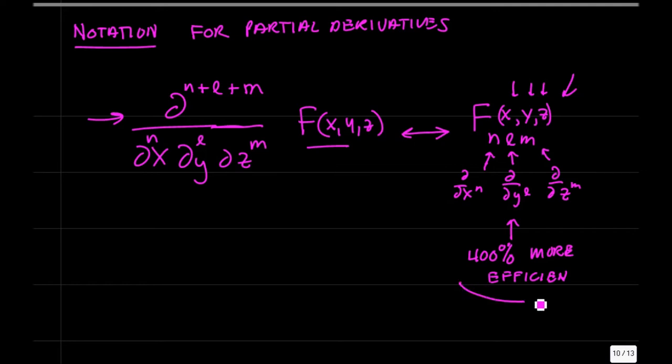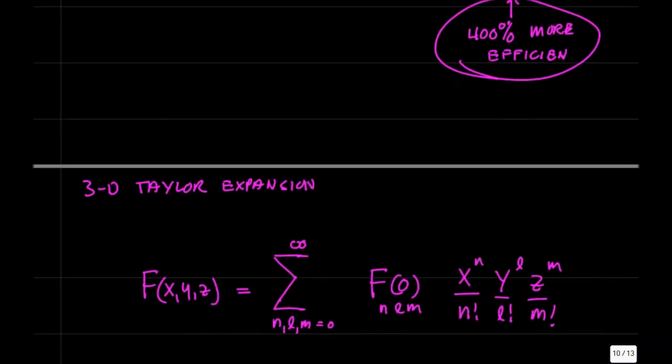If you count up the number of characters you need to write this partial derivative compared to this notation over here, the nlm notation is 400% more efficient, and over a lifetime of calculation, that will save a lot of wear and tear. So, if possible, use a simplified notation for these partial derivatives.